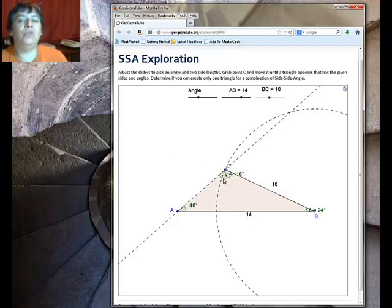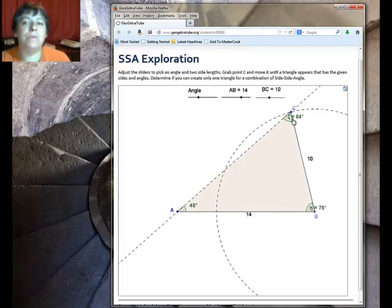You cannot prove that triangles are congruent just because they have an angle, a side, and a side or side-side-angle. You can see right here these are two different triangles.